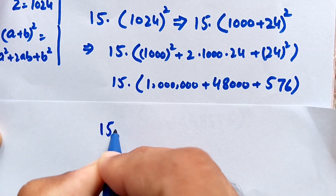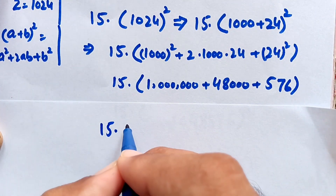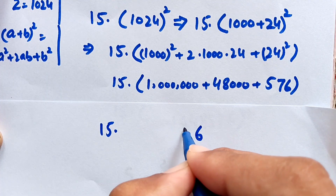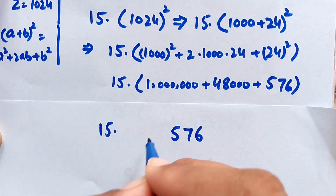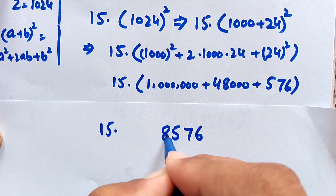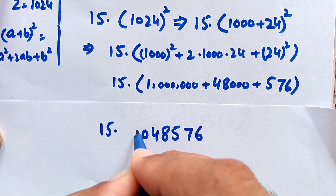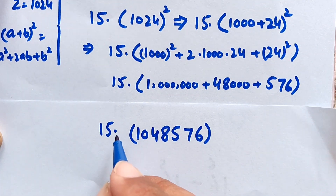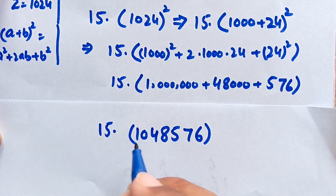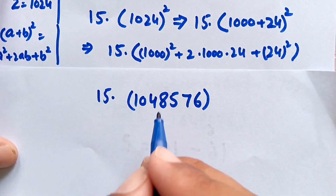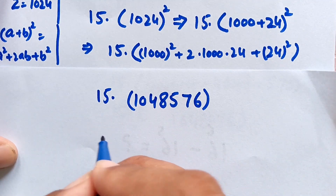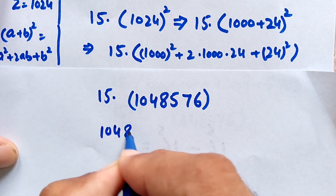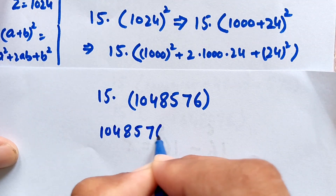Adding these numbers together gives 1,048,576. So we now have 15 times 1,048,576.